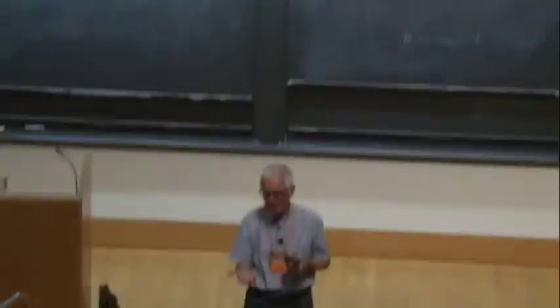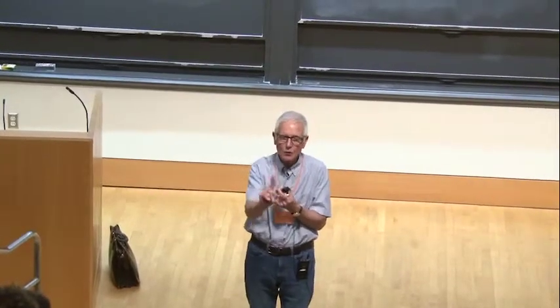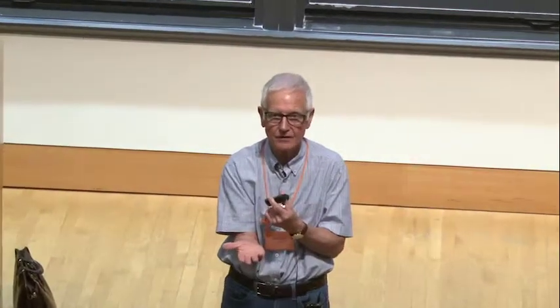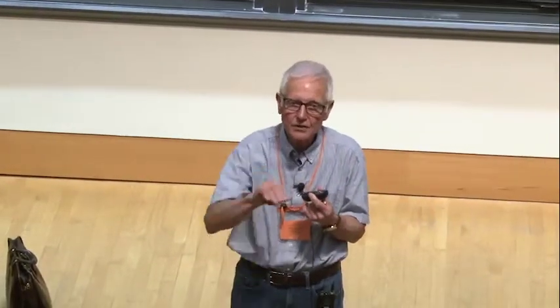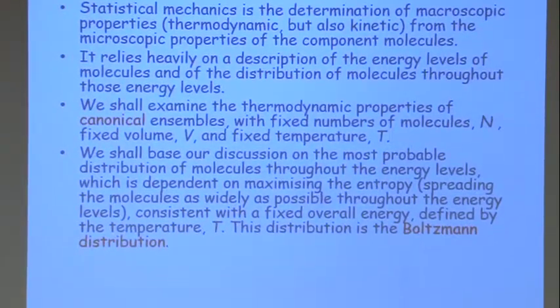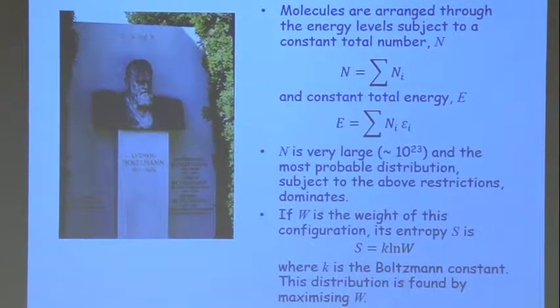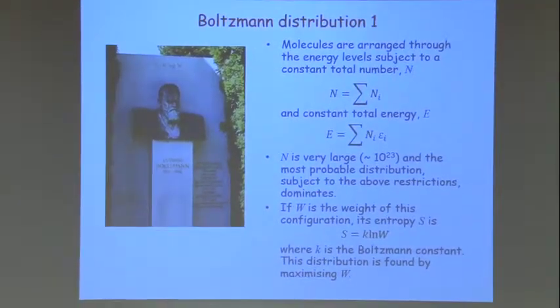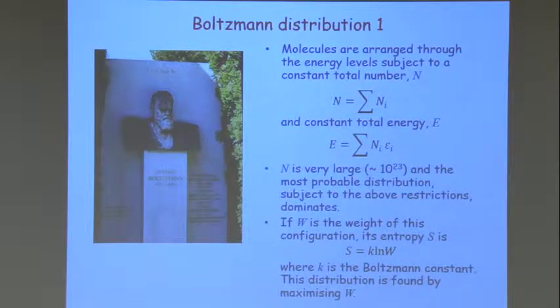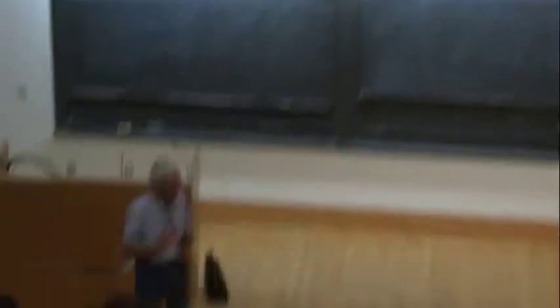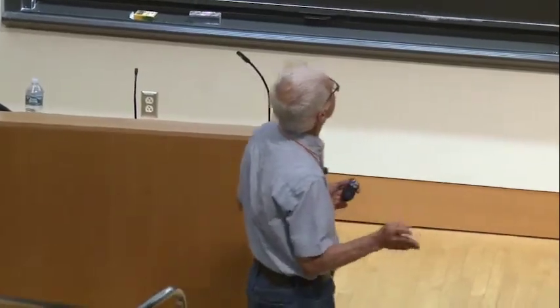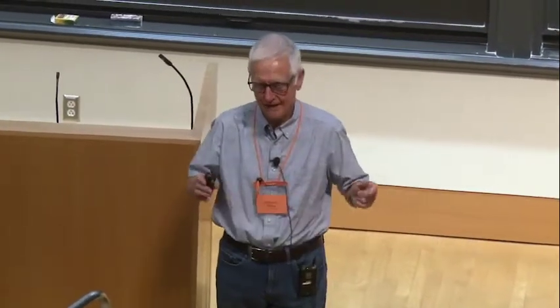If we put all the molecules in the lowest energy level, there's only one way of doing that. But if we spread them out, we can do that in lots and lots of different ways. Maximizing entropy means spreading them out as much as compatible with the constant temperature. This is Ludwig Boltzmann — his monument in Vienna. He was a truly great man; people unfortunately didn't realize just how good he was at the time, but what he has done has been phenomenally important.